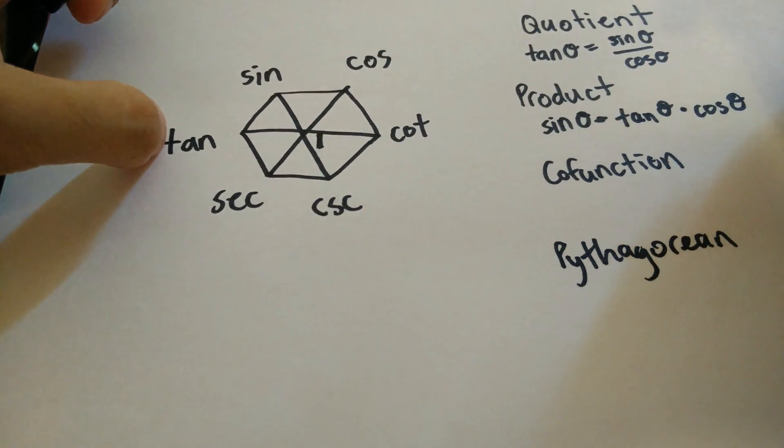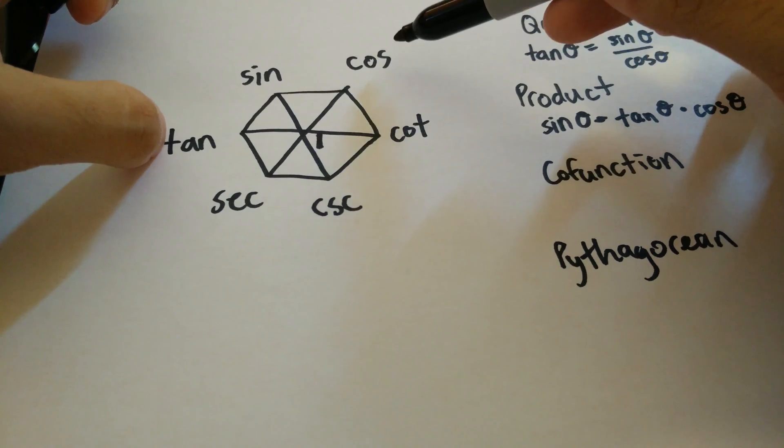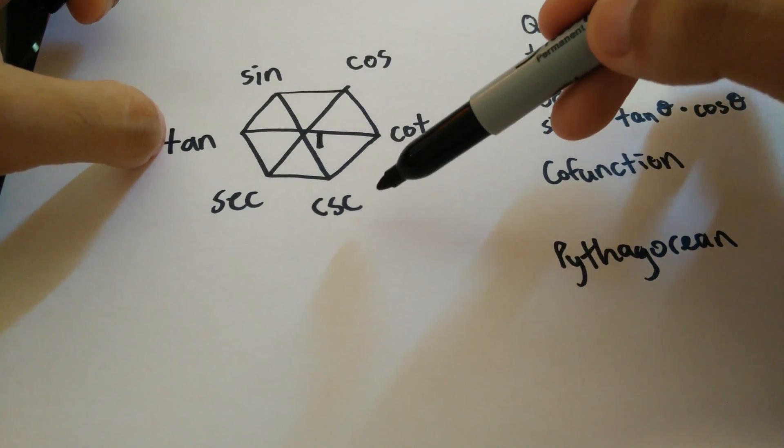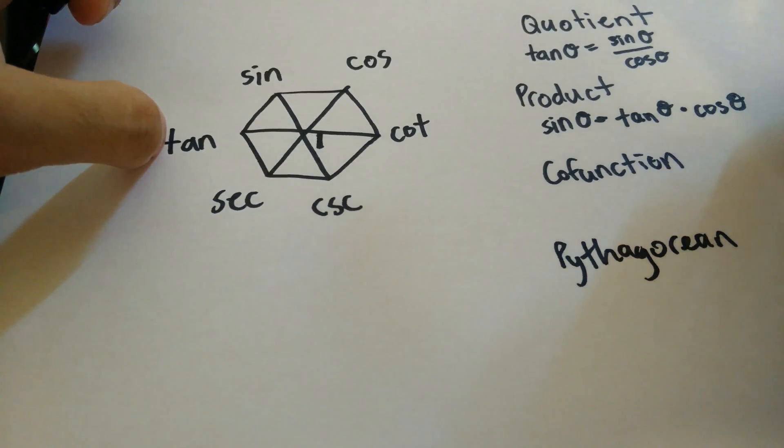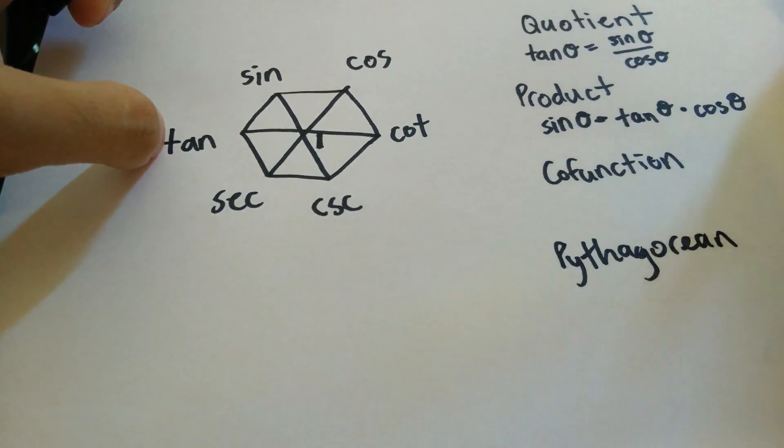This goes all the way around the circle as well. So cotangent theta would be equal to cosine theta times cosecant theta. And again, that goes all the way around. You can do it however you want. And 1 is equal to tangent times cotangent. That works too.